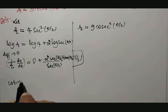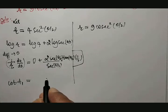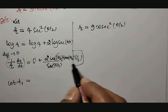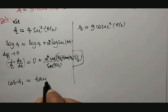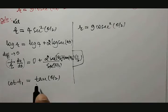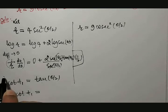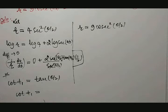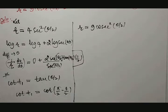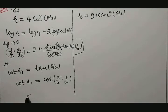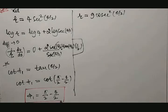Therefore, this can be called cot φ₁, which equals tan(θ/2) after the sec terms and the 1/2 cancel. We know that to convert tan into cot — since it is a positive tan and should stay in the first quadrant — it becomes cot(90° - θ/2). Therefore, φ₁ = π/2 - θ/2. This is the first result, the first value of φ₁.